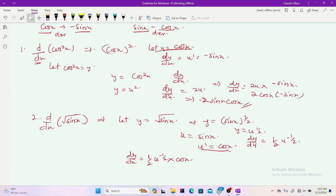So my dy/dx is equal to half u^(-1/2) times cos x, which is this. What's my u? My u is sin x. So I'm going to have 1/2 sin x^(-1/2) times cos x. That's all.